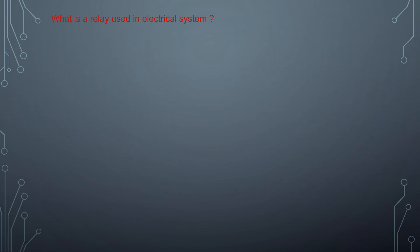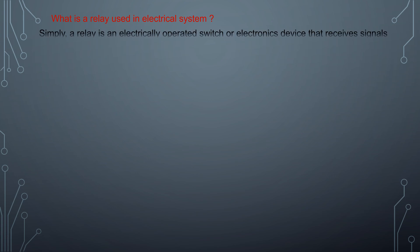What is a relay used in electrical systems? Simply, a relay is an electrically operated switch or electronic device that receives signals from outside sources to open and close circuits.